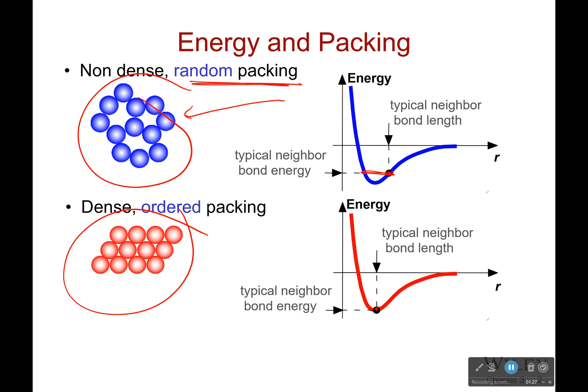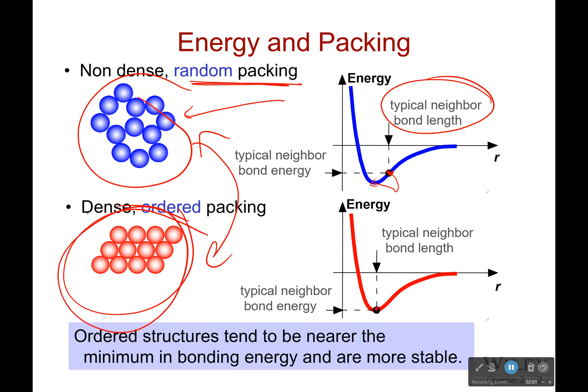Dense ordered packing makes it much more stable. This is actually the reason that if you give diamond a long enough time, it will turn into pencil lead. The whole thing — diamonds are forever? Not true. Diamond is extremely hard; however, its typical neighbor bond length is actually higher than it should be for a crystal made out of carbon, and eventually it will drop back down. Now that takes millions upon millions of years, so diamonds are forever when it comes to a human life. But eventually it will go back to the dense ordered packing that it wants to be in. These ordered structures tend to be near the minimum bonding energy, and therefore are more stable.